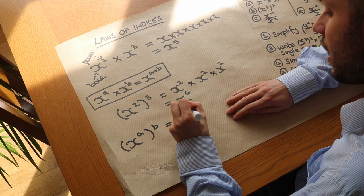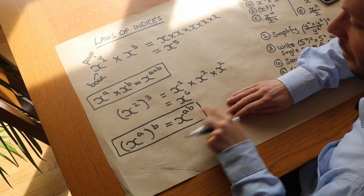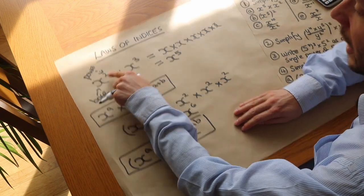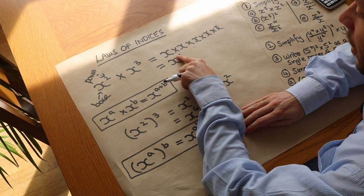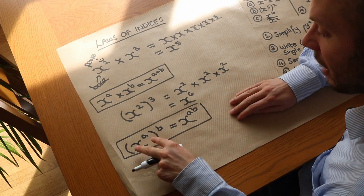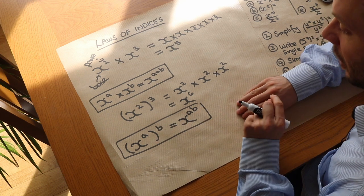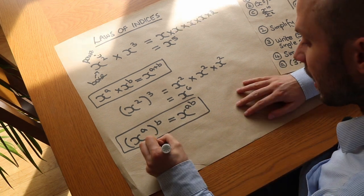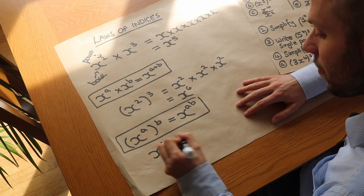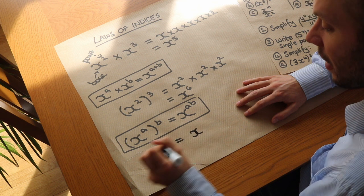So we get x to the power of a times b. Make sure you understand the difference between the two: when multiplying two power expressions you add the indices, and when raising a power to another power you multiply the indices together. Also, x to the power of one means you just have x.